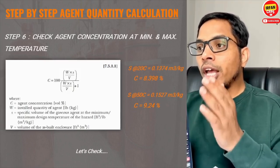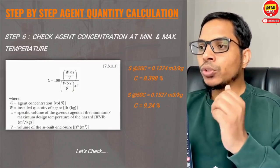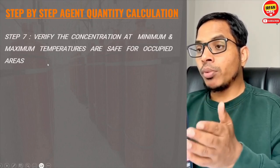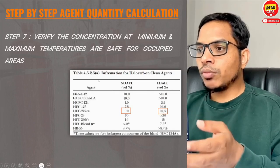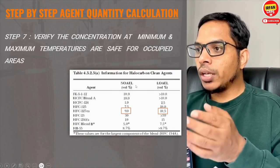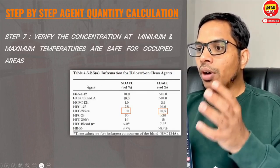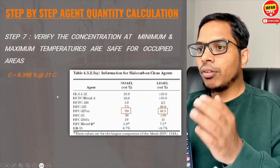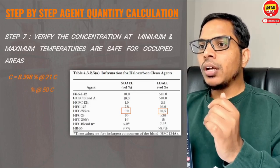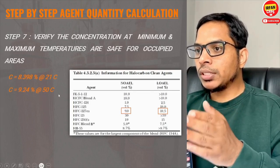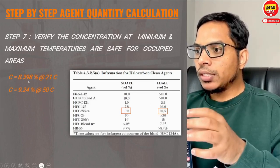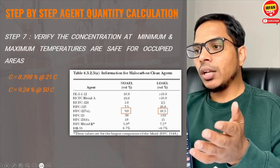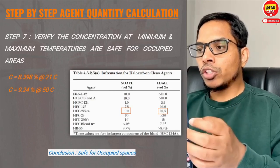We need to verify that our concentrations at minimum and maximum temperatures are safe for occupied areas. As per NFPA 2001, the table shows NOAEL and LOAEL levels. Our results — 8.398% at 21°C and 9.24% at 50°C — are both below the NOAEL level and below the LOAEL level. We can therefore conclude these concentrations are safe for occupied areas.